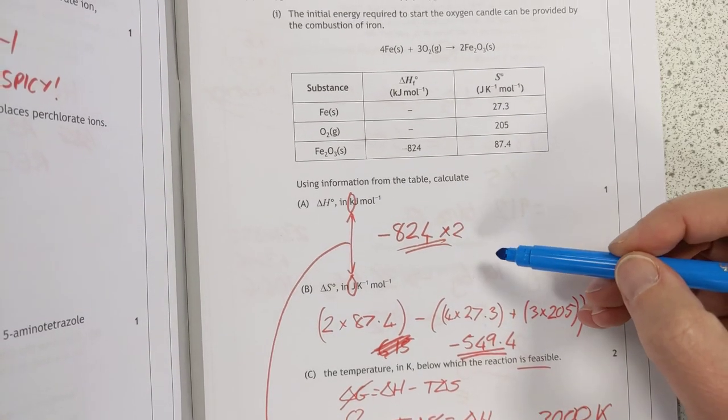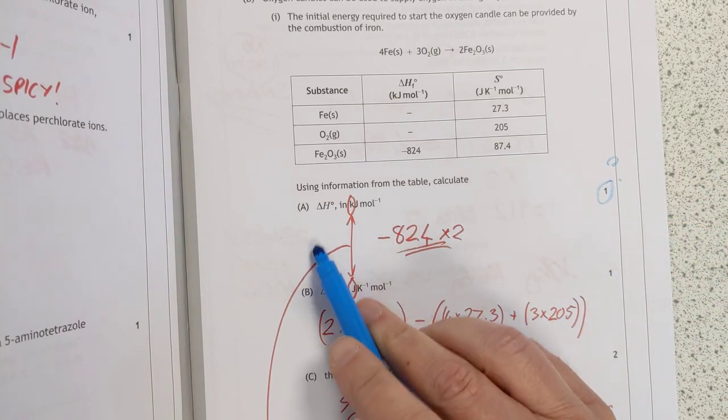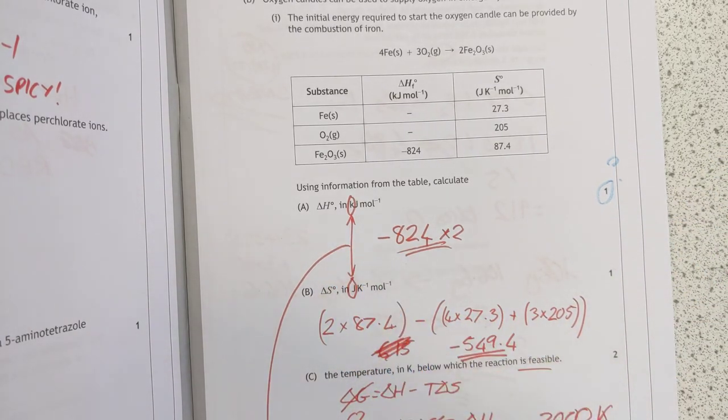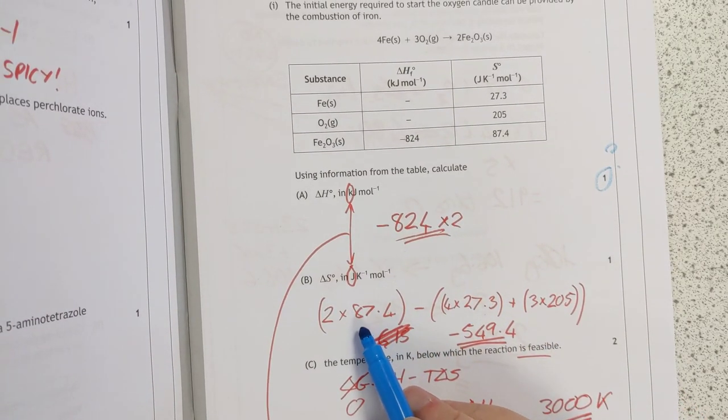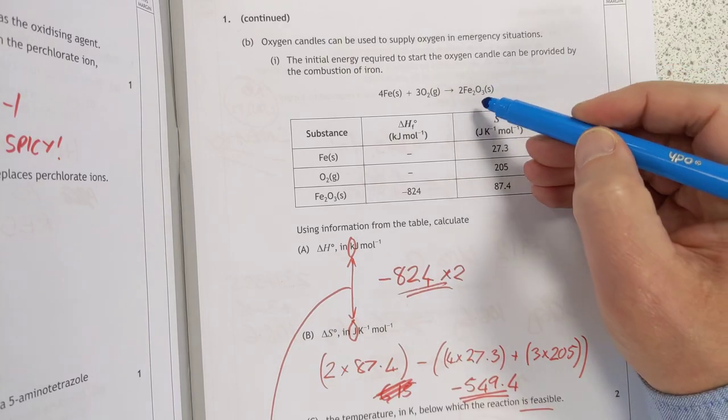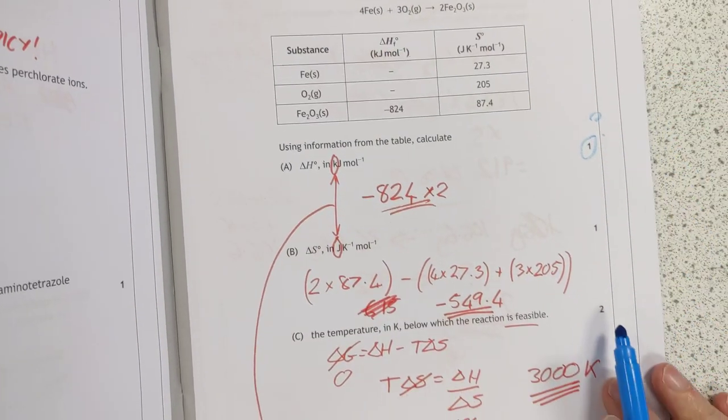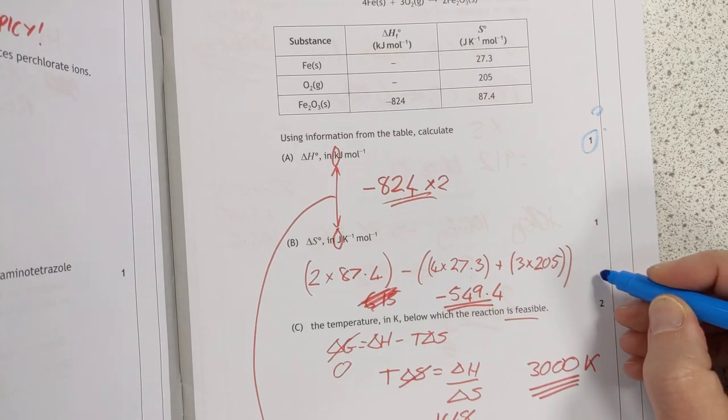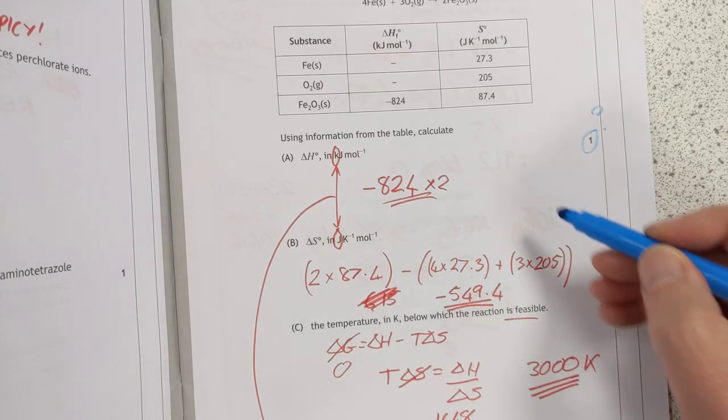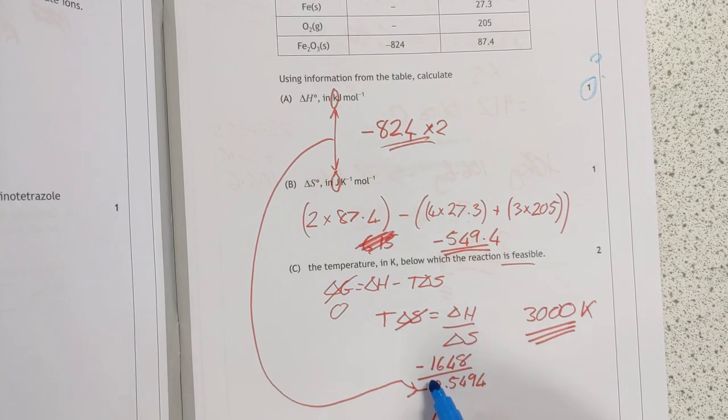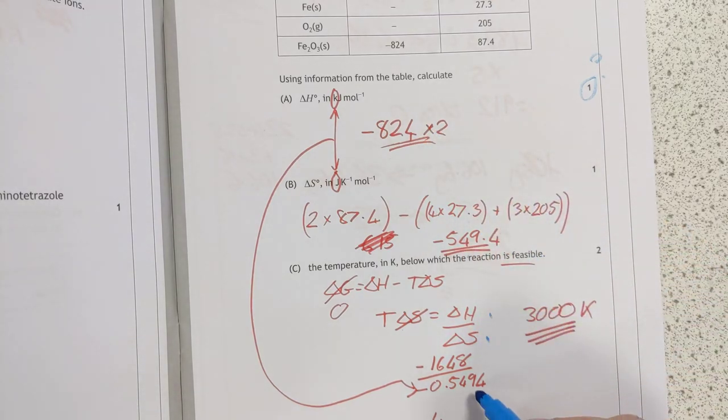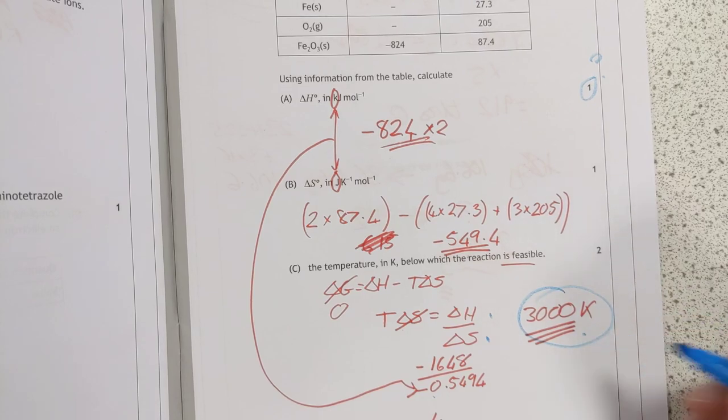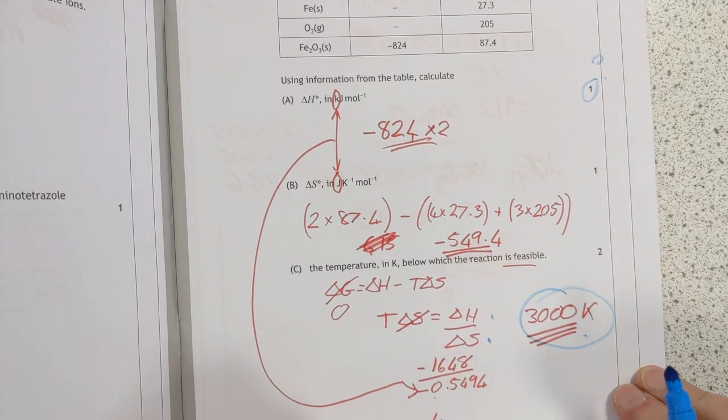This one here looks like just delta H minus 824. Delta S is a bit more like it. We have to actually add up 824 times 2. We have to add up the total entropy of all the products, and then deduct the total entropy of all the reactants. I did this late last night. It's entirely possible these are not correct. So I apologize if that's the case. I got minus 549, minus 2 watts of that. You pop these numbers into here. You get your delta H on the top. Delta S on the bottom. Please remember that that is joules, and that is kilojoules. That's kilojoules. So you need to make sure they're both in the same unit. I got 3,000 Kelvin, but don't flap too much if you did not get that.